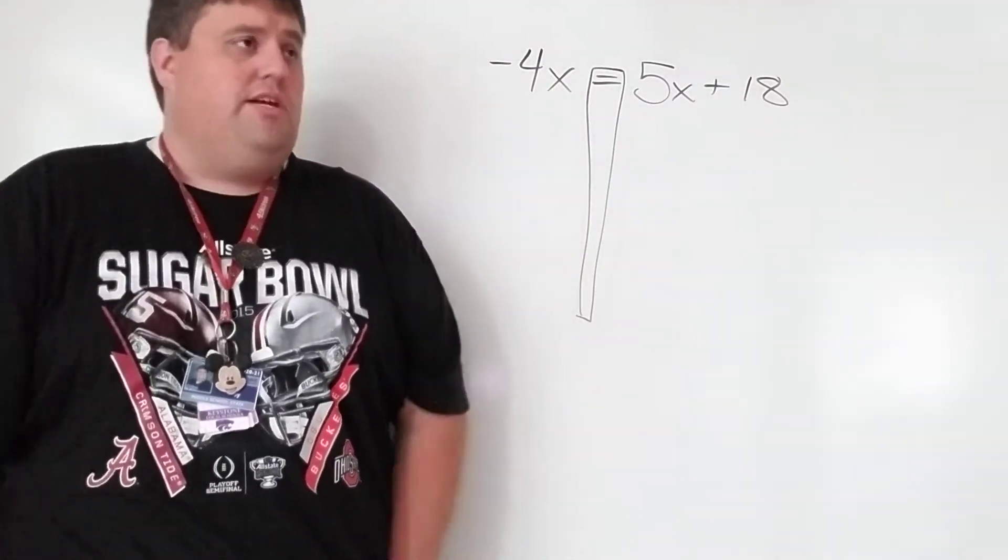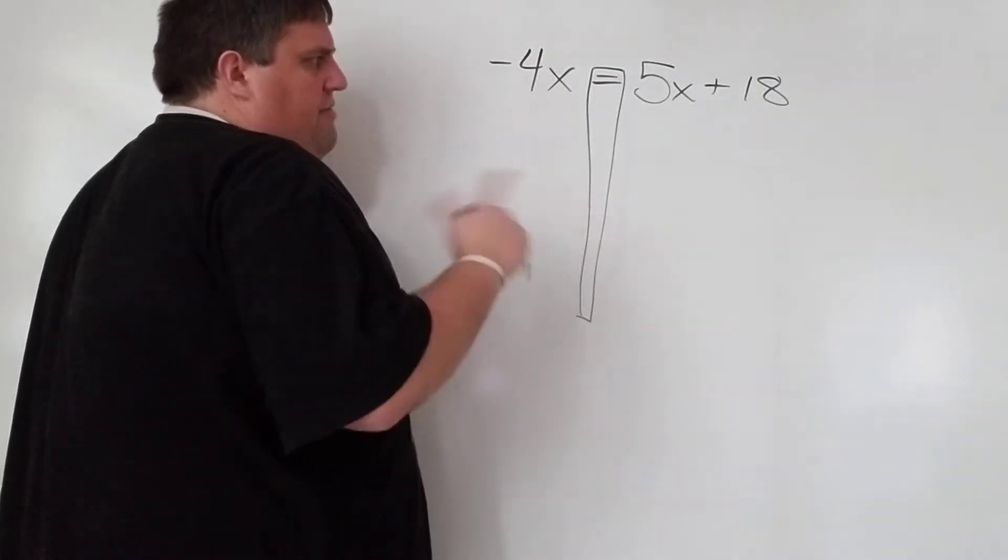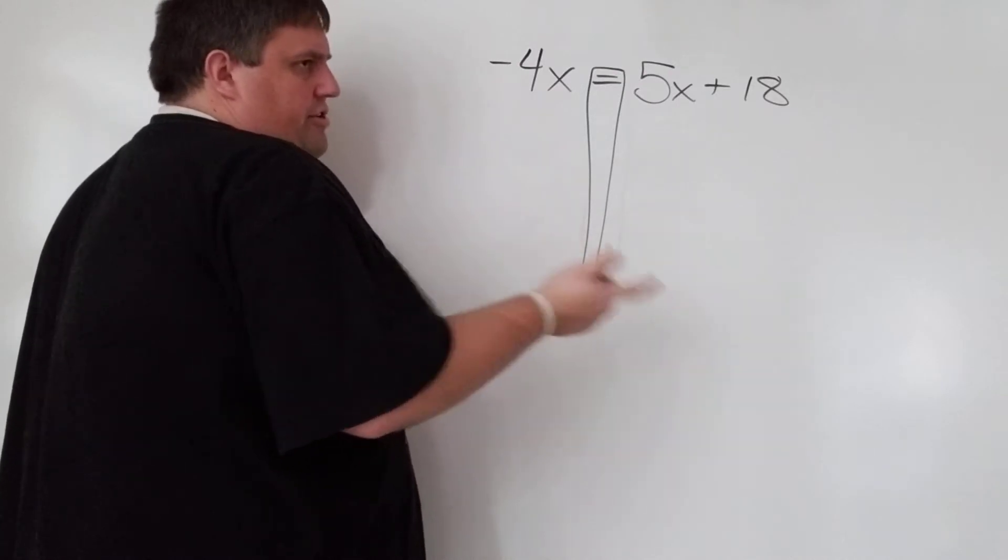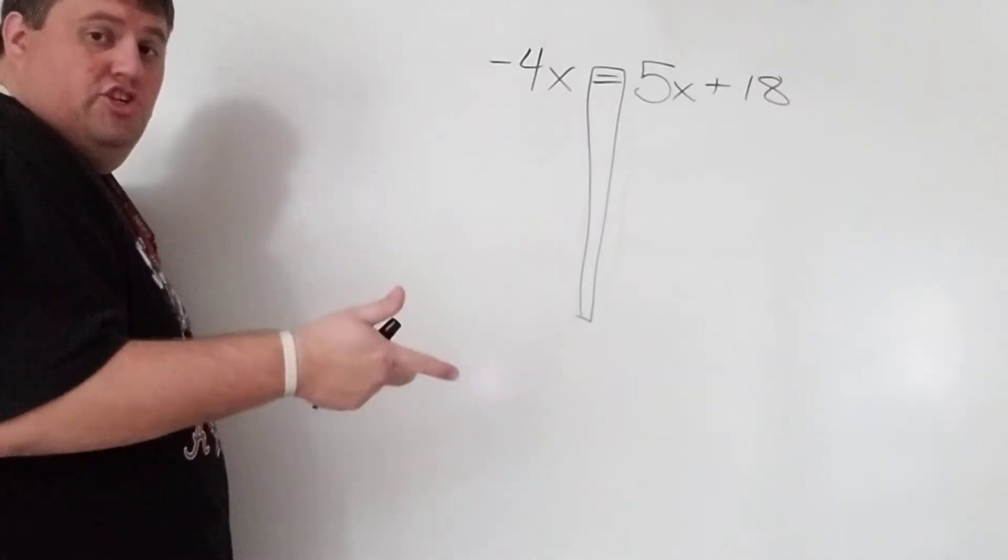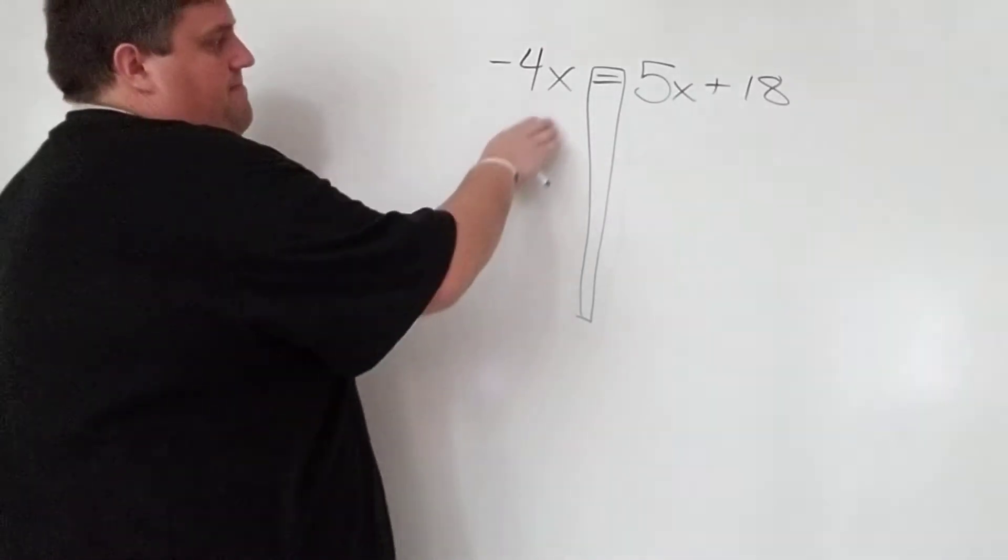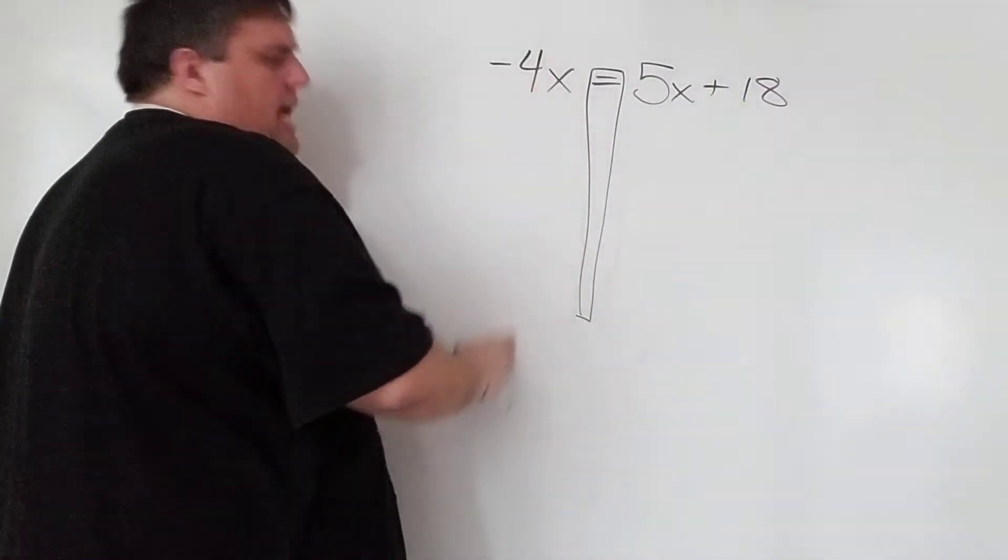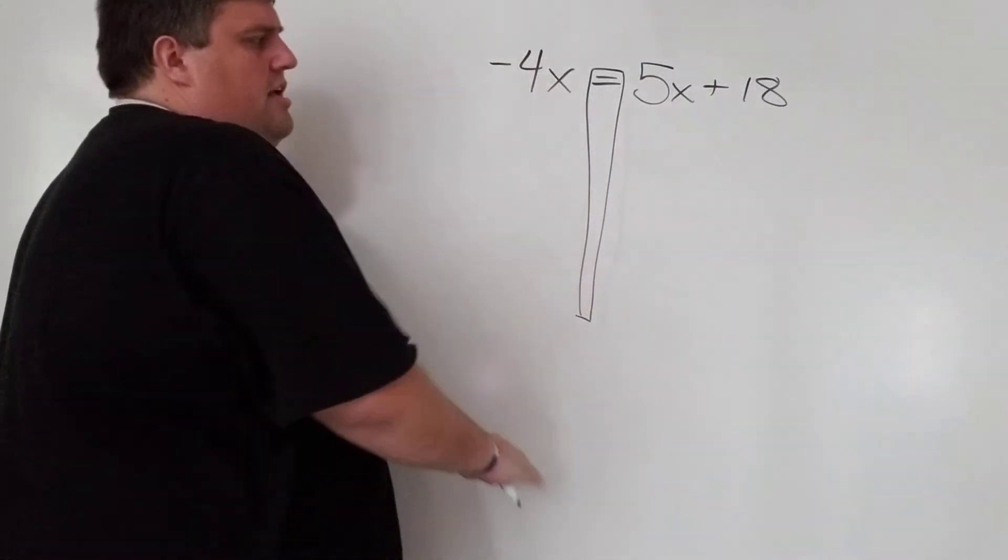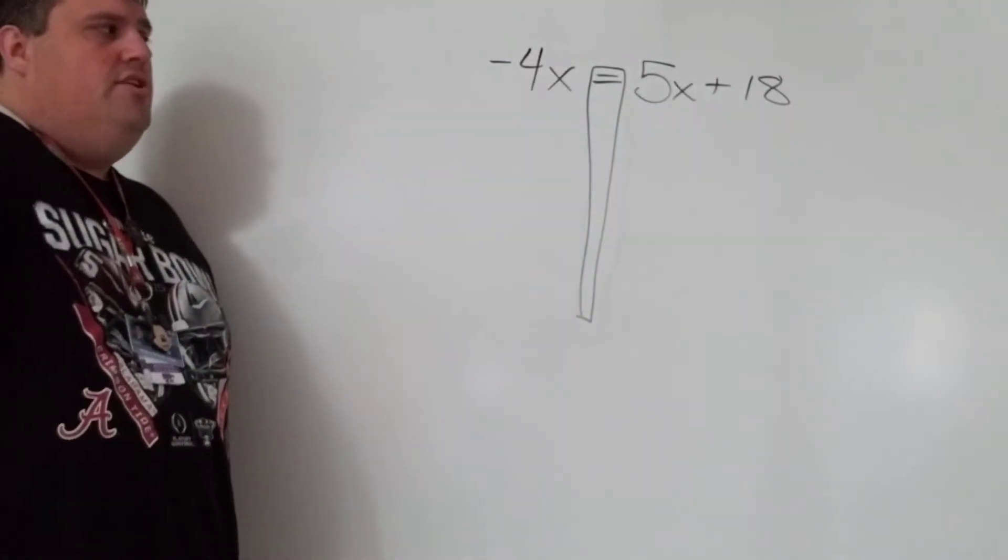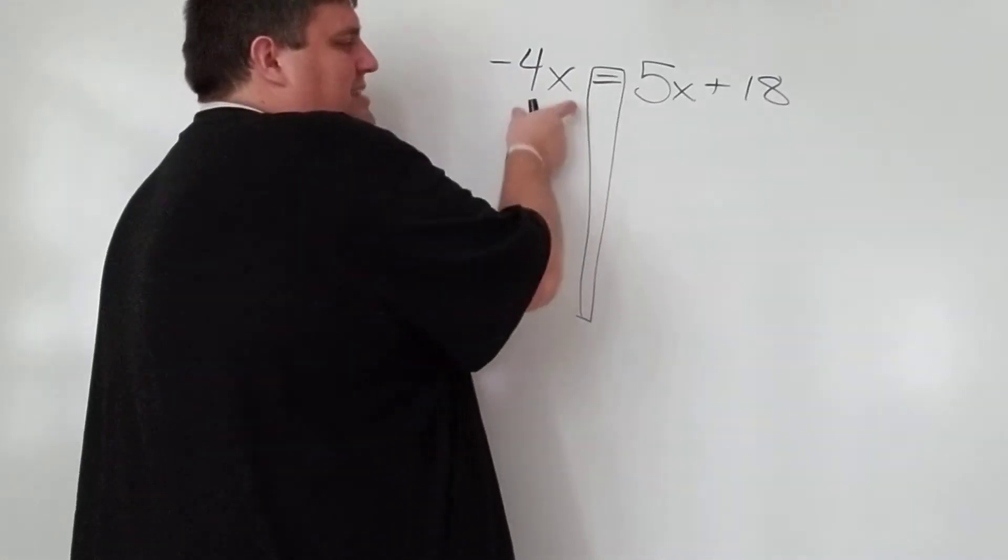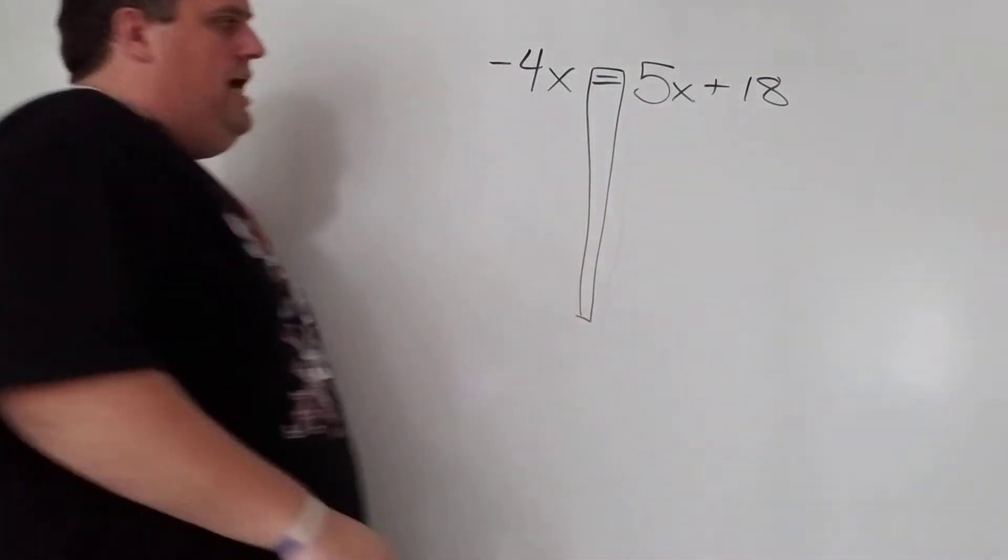So I'm going to need to do something here. Now, last problem I told you, it doesn't matter which variable you get rid of. That's kind of true. On this one, I would say that it matters. And if you're not sure why, take a look on this side. If I got rid of negative 4x here, there's nothing left on this side of the equation. And that usually trips people up pretty hard. So my recommendation is if there's only an x on that side, get rid of the other one. And that will help you out.